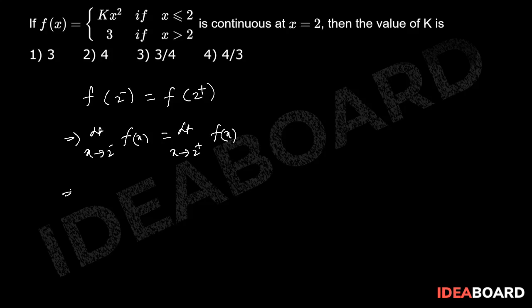That implies: the left-hand limit as x tends to 2 minus — where x is less than 2, so the function is kx² — equals the right-hand limit as x tends to 2 plus — where x is greater than 2, so the function equals 3.